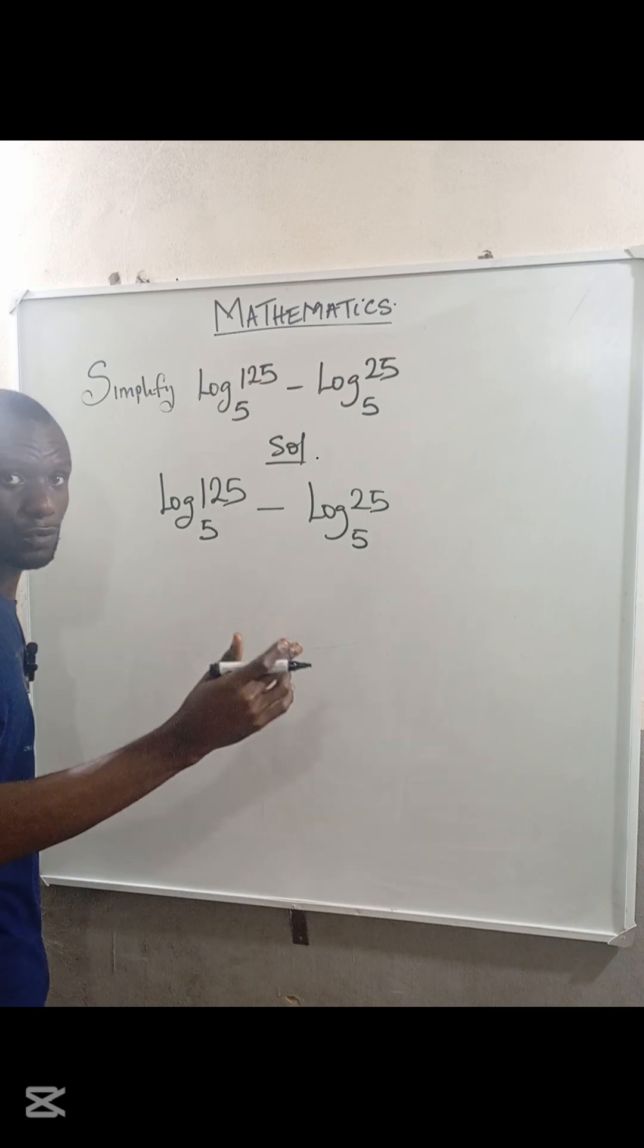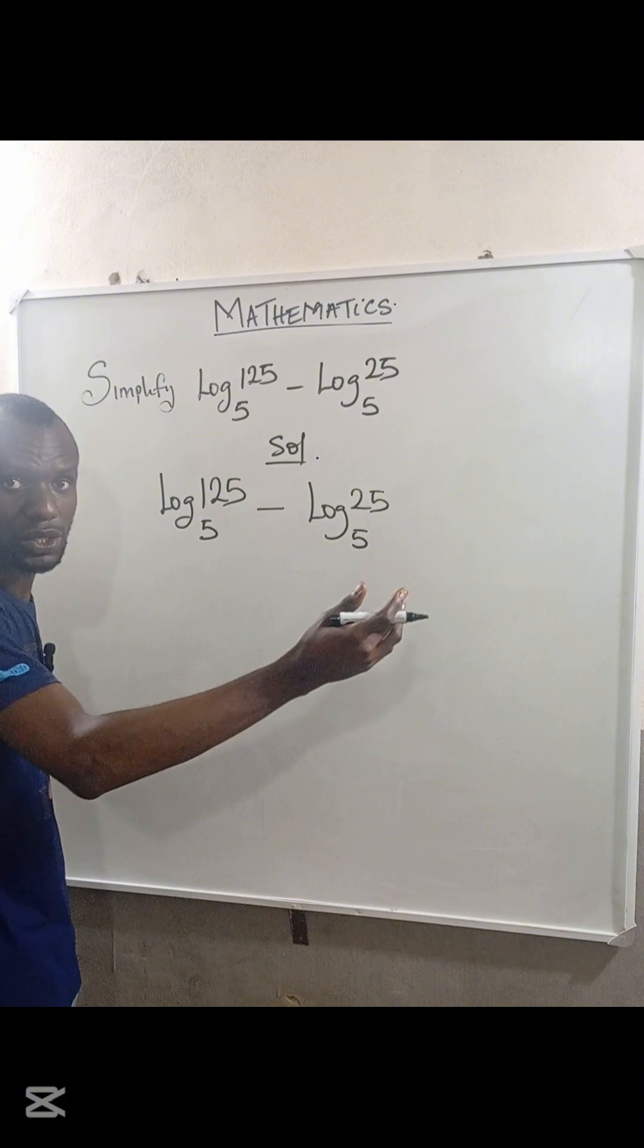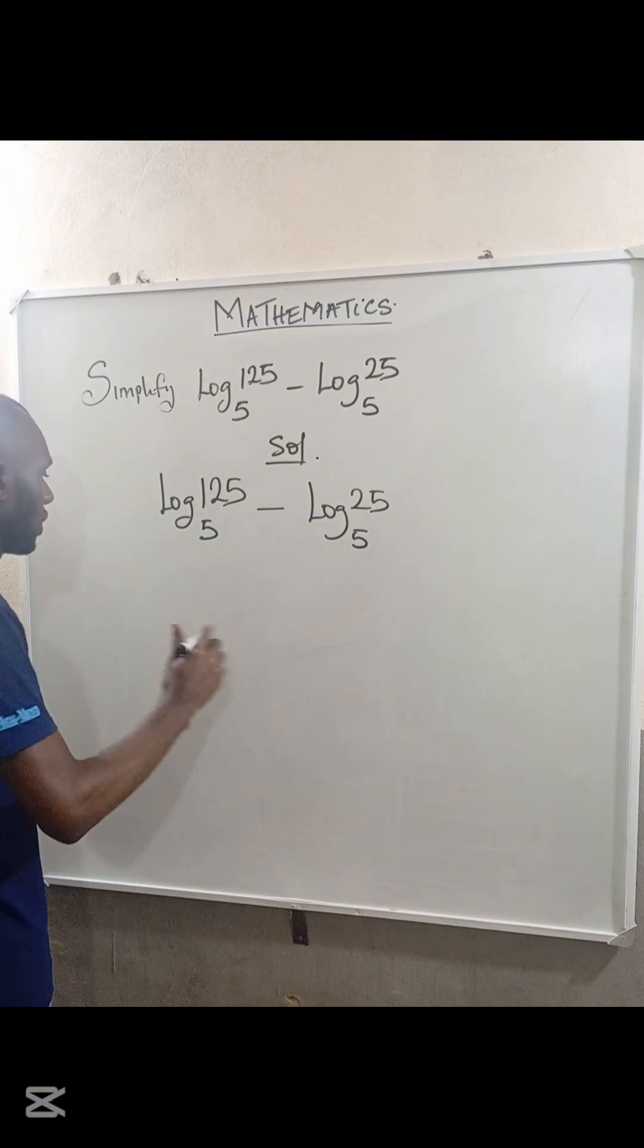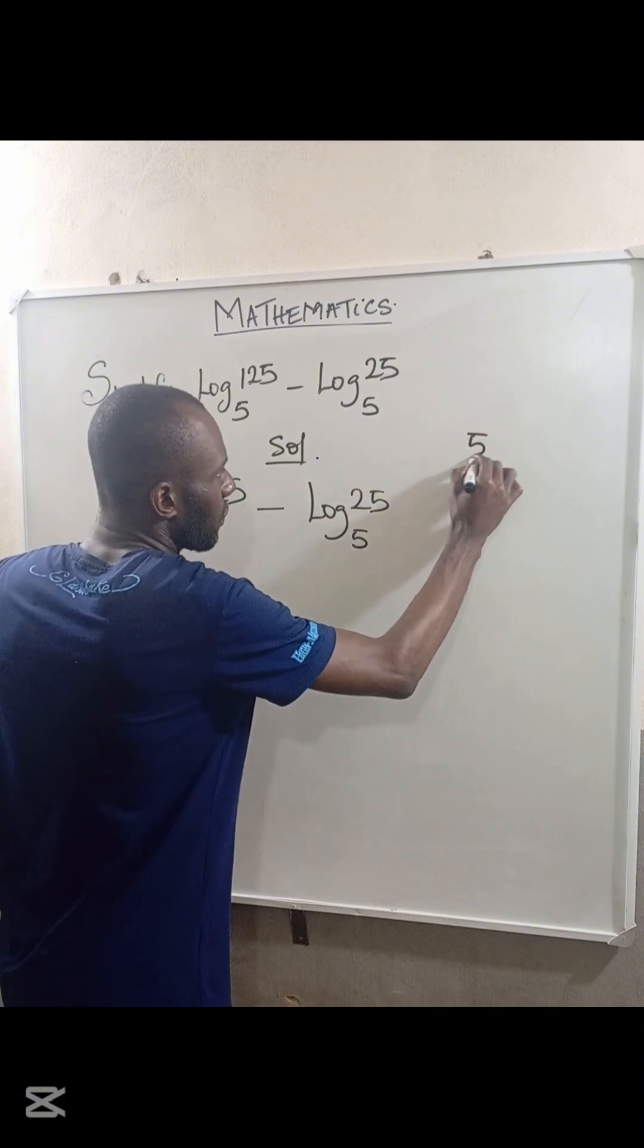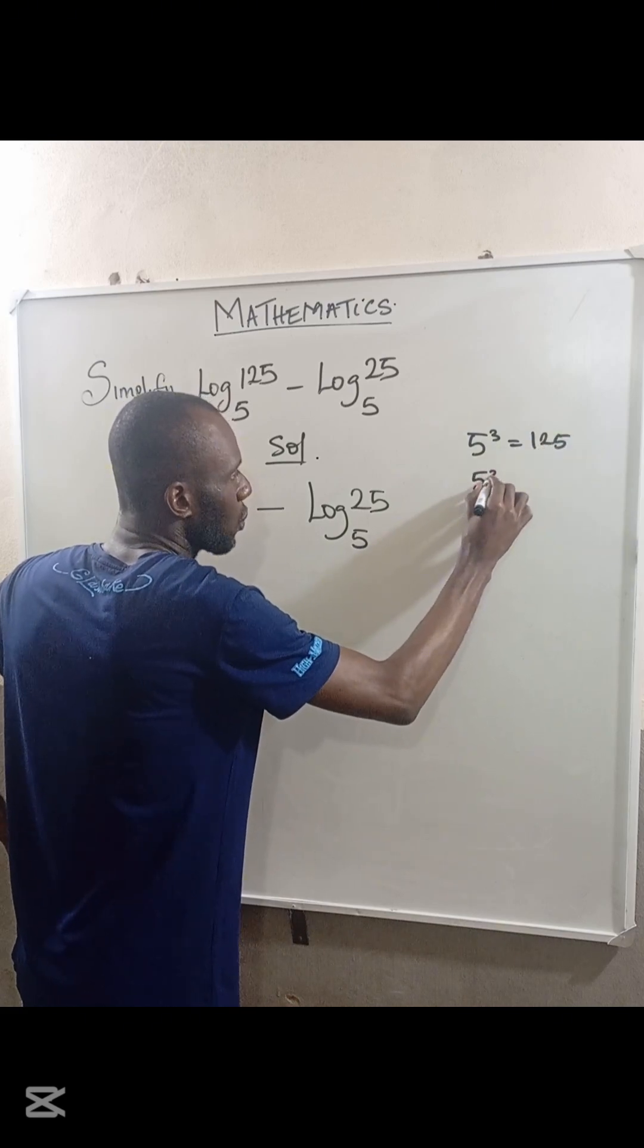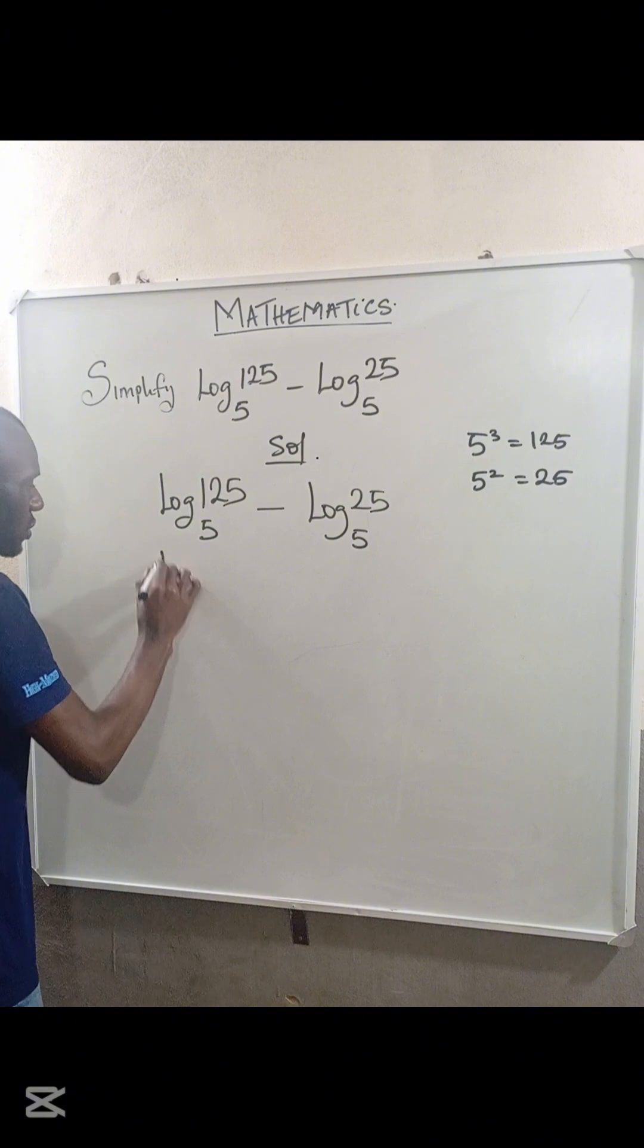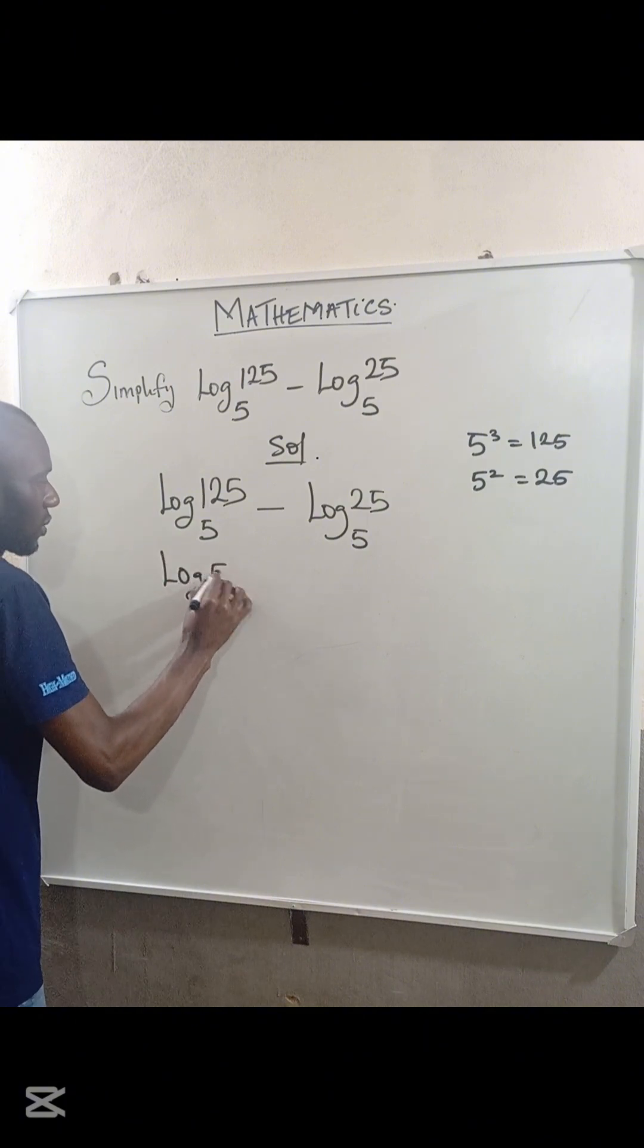We have to express 125 and 25 in powers of base 5. We know that 5 cubed equals 125 and 5 squared equals 25. So the expression becomes log 5 cubed base 5 minus log 5 squared base 5.